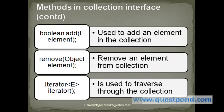To add an element within the collection we have the add method, within which we can pass the element needed to be added. Similarly, to remove an element from a collection we have the remove method. To loop through the collection we have an iterator function which returns an iterator, using which we can loop through the given collection and get the elements present within it.